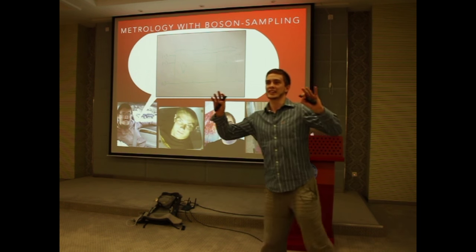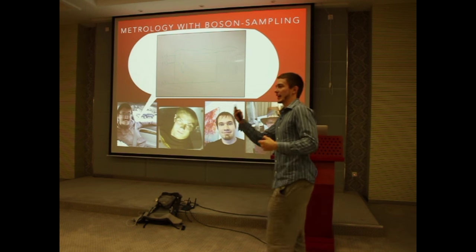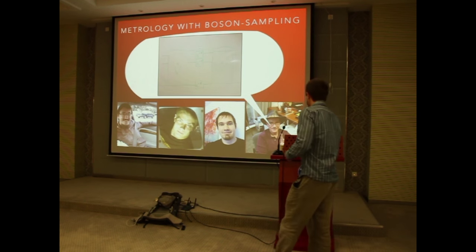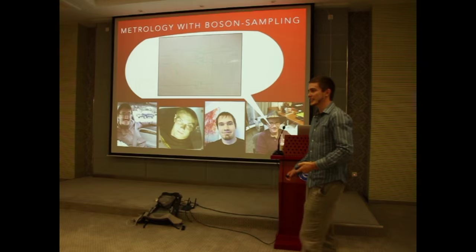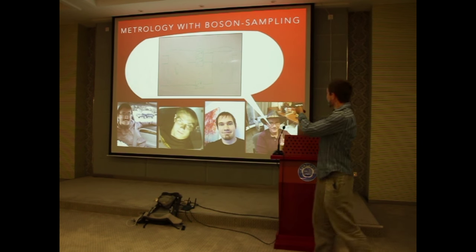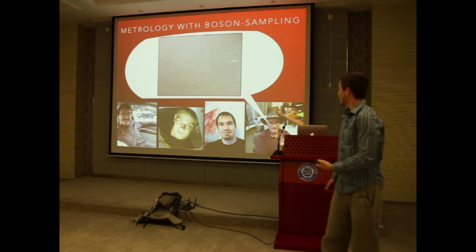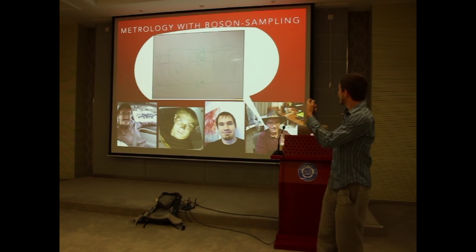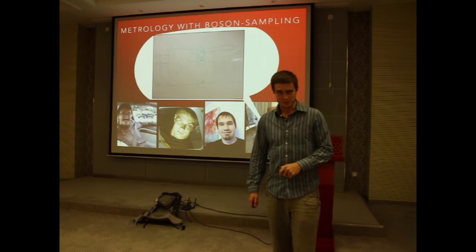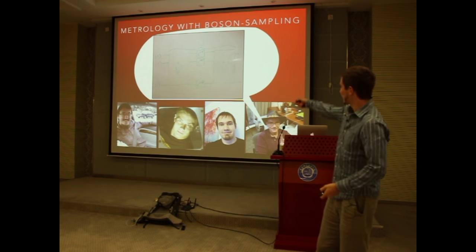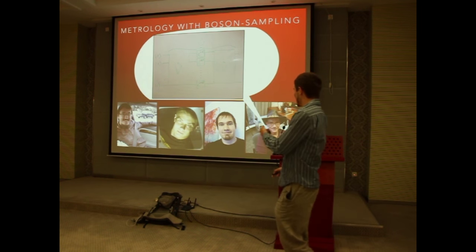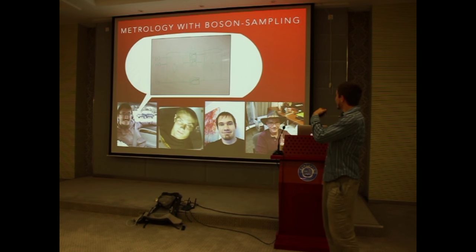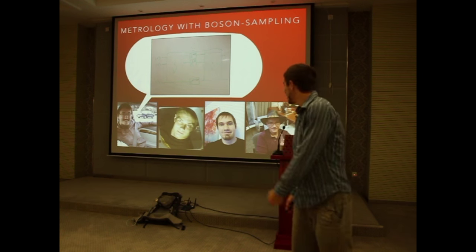Jonathan Olsen writes on the board: what if we have two unitaries — one the dagger of the other — giving identity? John suggests putting a gradient of unknown phases in the middle, with phi in every mode. But of course that's just a global phase. So what about a linear gradient: one phi, two phi, all the way to n phi? But Peter points out there's still a global phase. So we factor one out and arrive at a gradient starting at zero phi up to n minus one phi.